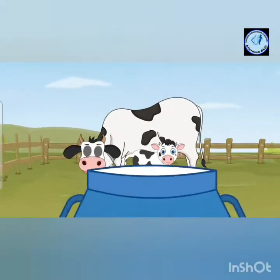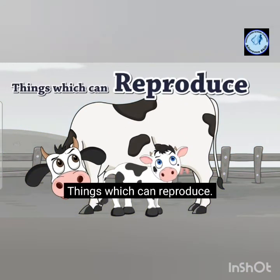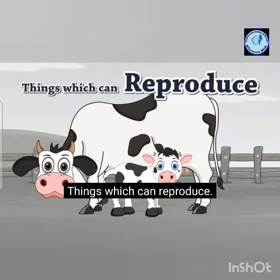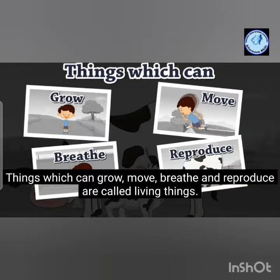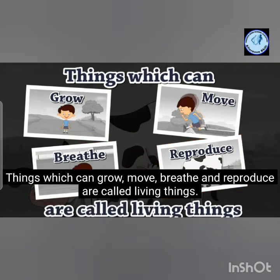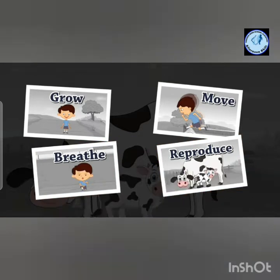Now, children, what did he see? He saw a milk can and this cow. Living things can grow, can move, can breathe, and can reproduce. So they are called living things.